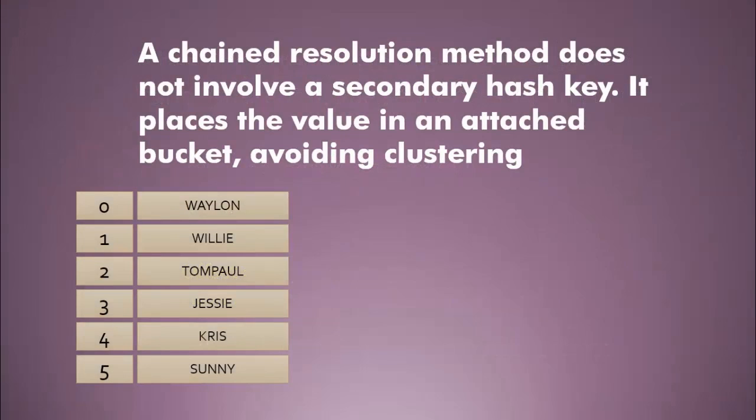Both linear probing and double hashing have a relative cost, with linear probing costing more than double hashing or open indexing strategies. They have a cost in terms of stealing from future efficiency. When I do a linear probe and walk down the list, I place an item into an index value that belongs to somebody else. So when I go to hash the value that actually belongs there, I've already got a collision built in. The more of the table I fill with values that don't belong there, the less efficient my collision resolution becomes.